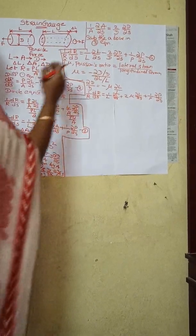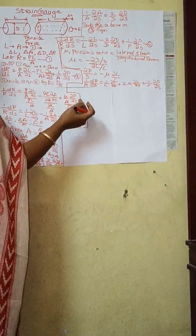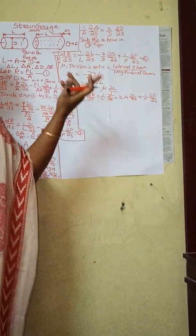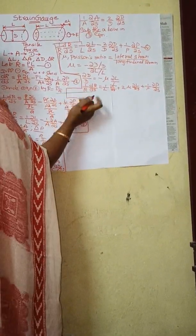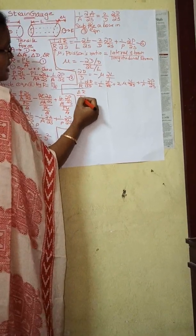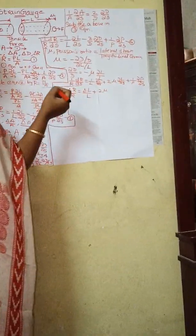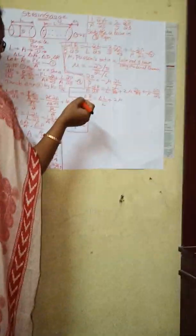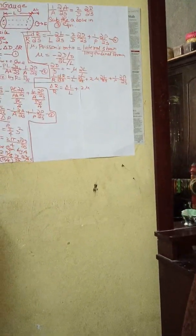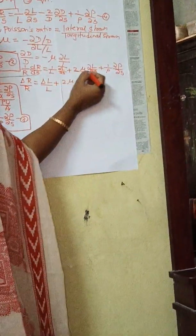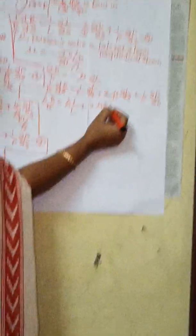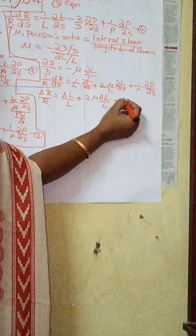For small variations, we can rewrite the above equation as: ΔR/R = ΔL/L + 2μ(ΔL/L) + Δρ/ρ. Let this be your fifth equation.